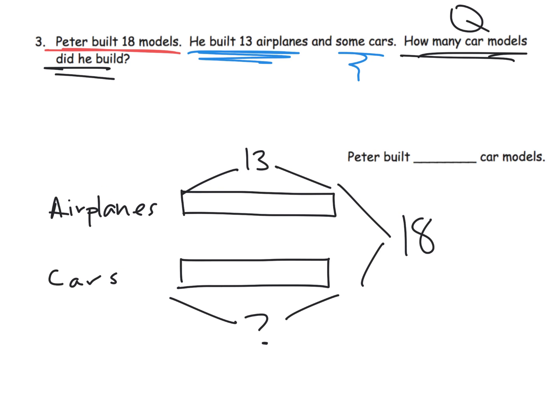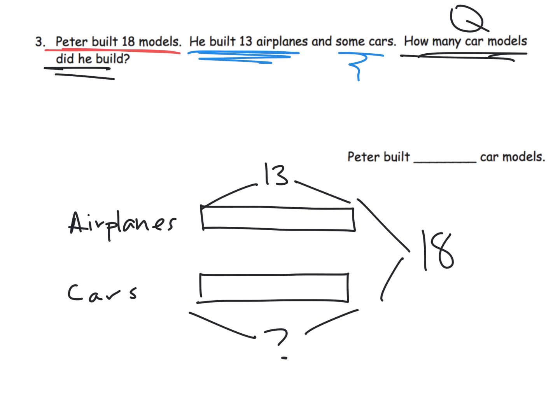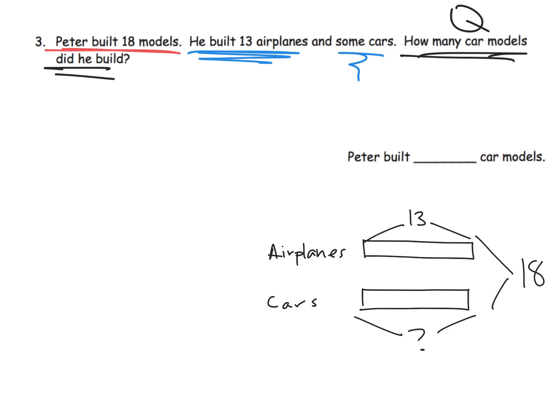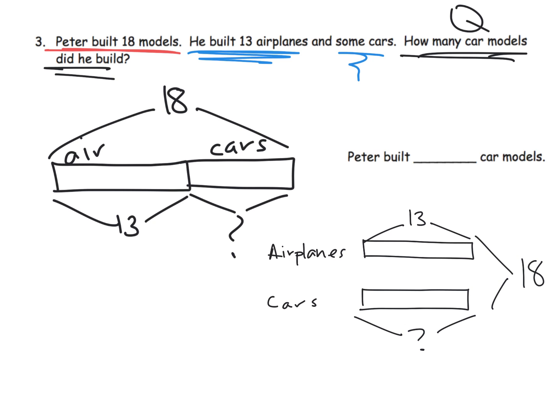So here's another way you could model this question. This is using two separate tape diagrams. This is very much in line with the Singapore technique. It's called the Singapore bar model is often what they call it. Now, we didn't have to do it this way. I'm going to shrink that down. More classic way to do it, airplanes, cars, and then 13 is the airplane. So I'm going to put 13 here. Cars is the question mark.